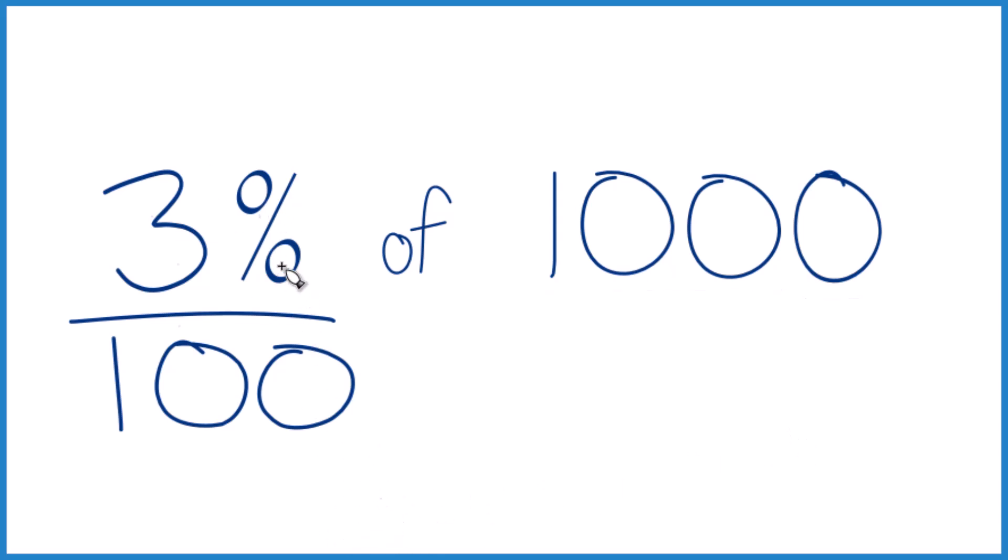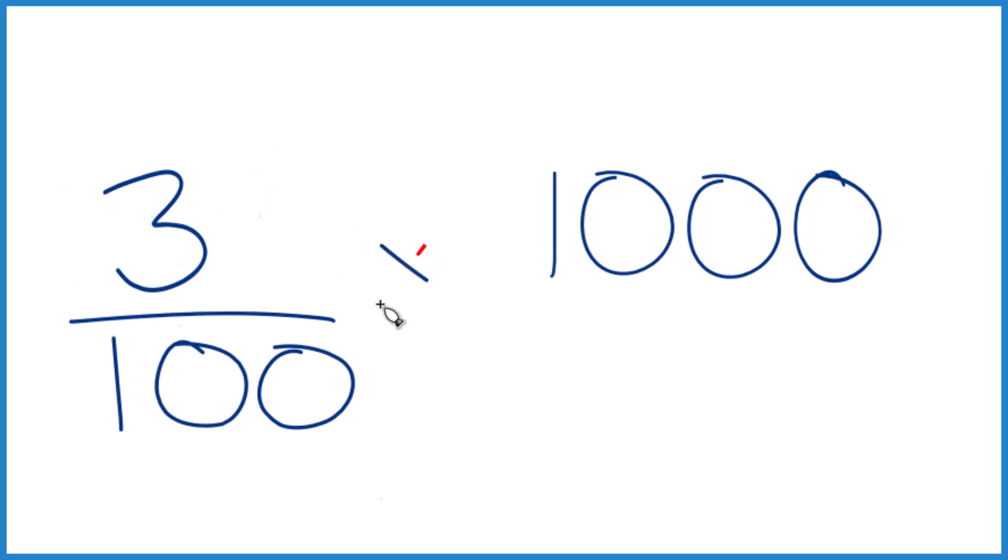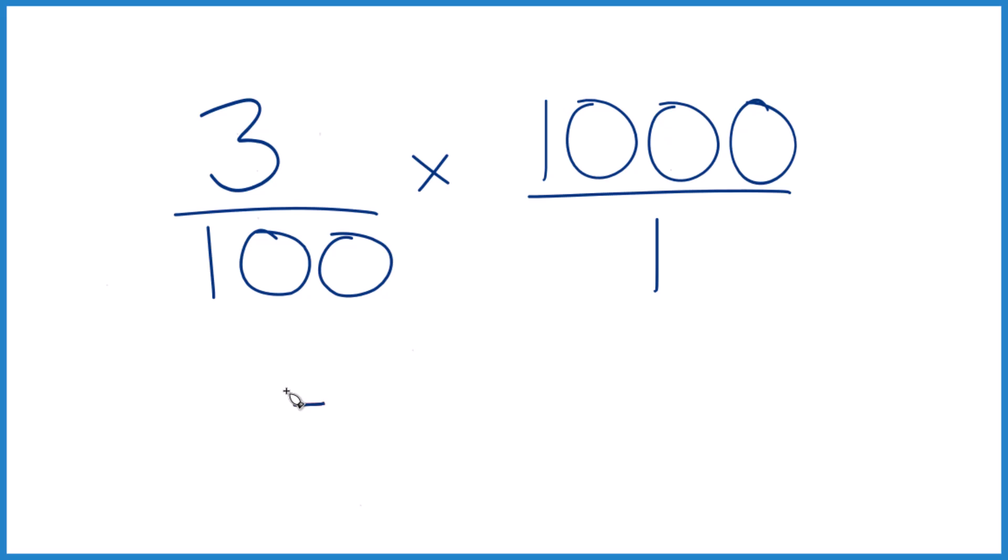So three out of 100, we can get rid of the percent sign here, and then instead of of, what we're gonna do is we're gonna multiply. Let's call it 1,000 over 1. It's still 1,000, but things line up nice. Three times 1,000, that equals 3,000. 100 times 1, that equals 100.